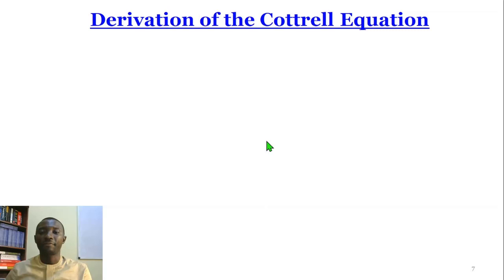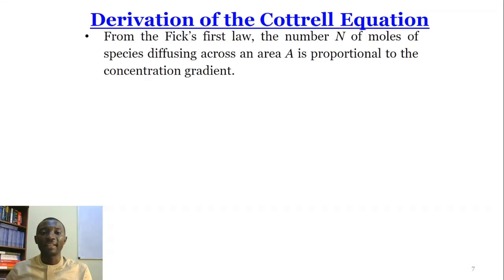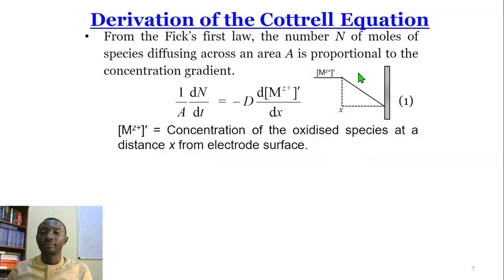Before we derive the Ilkovič equation, let us first of all derive the Cottrell equation, upon which the Ilkovič equation is based on. So from Fick's first law, the number N of moles of species diffusing across an area A is proportional to the concentration gradient. Mathematically, this can be written in terms of equation 1. And this is the gradient we're talking about. This is concentration gradient developing between the bulk of the solution and the electrode surface. A planar electrode in this case, that's what we are basing our derivation on.